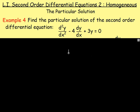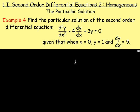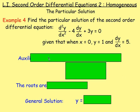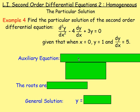The additional information we have is that when x equals 0, y is 1, and dy/dx equals 5. Starting this off the same way, the first thing we need is the auxiliary equation.